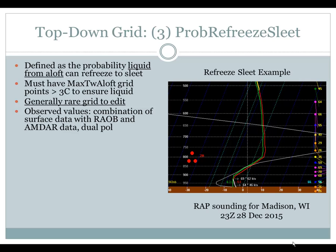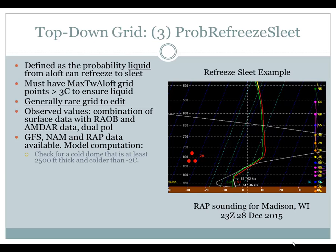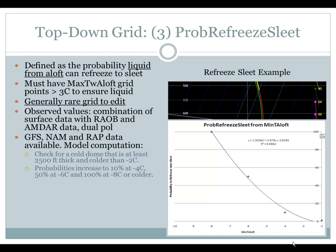GFS, NAM, and RAP data are available. To compute this, the algorithm first looks for a cold dome that is at least 2,500 feet thick and colder than minus 2°C. The probabilities increase to about 10% at minus 4°C, 50% at minus 6°C, and 100% at minus 8°C. As you go colder toward minus 7 or minus 8°C, that probability of refreeze greatly increases toward 100%. See the probability of weather type documentation for more details.